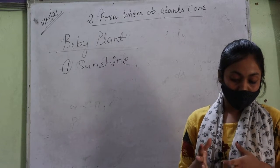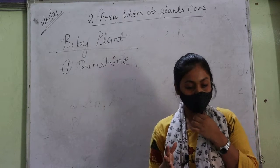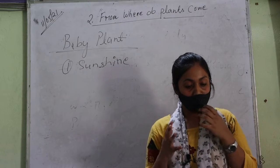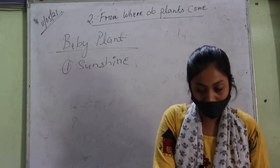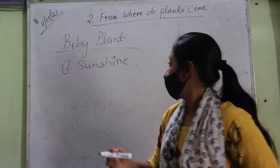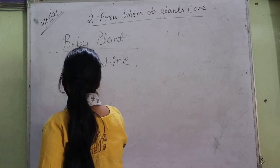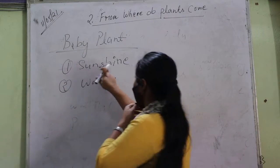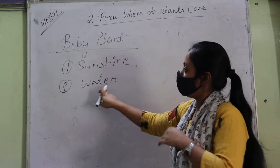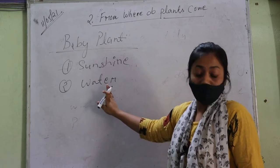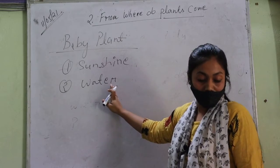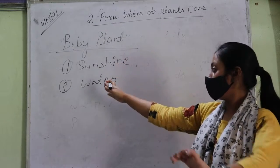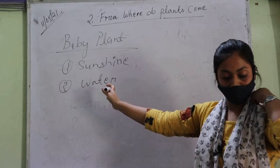Dhoop baby plant ko grow karne ke liye garam rakhta hai - warmth dhoop chahiye. Next, number two is water. First is sunshine and second is water. Paani chahiye hota hai, sab ko maloom hai, plants ko grow karne ke liye kya chahiye - they need water.